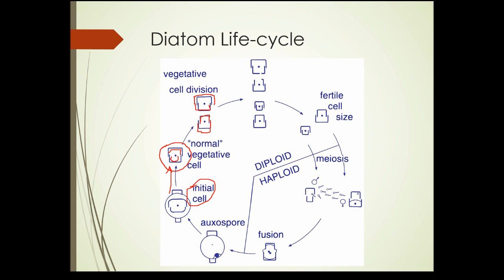However, the one that gets the bottom half has to create a new, smaller frustule to fit inside. When that happens again, we have a new bottom half, the original upper half, the bottom half of that cell, and the upper half of that cell — and each one now makes a new smaller piece that fits inside. You can see these cells getting smaller and smaller. Once they've been reduced by about a third, they form a fertile cell.